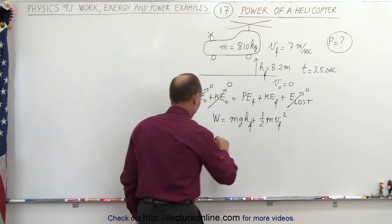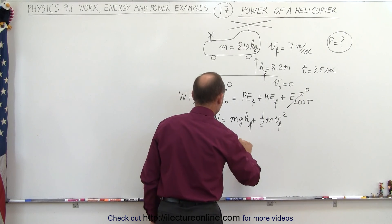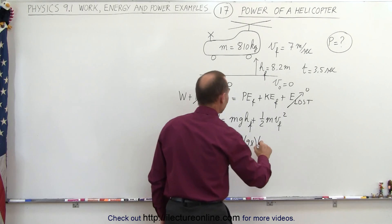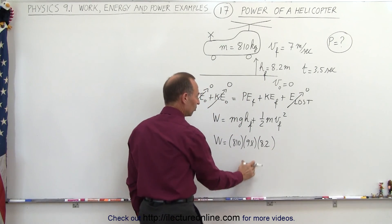All right, let's figure out what that is equal to. So any work put in is equal to the mass, 810 times g, 9.8, times the height, which is 8.2, so that's the increase in potential energy.